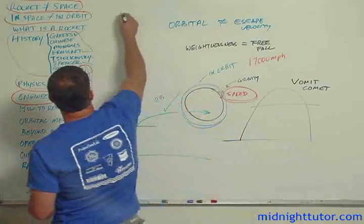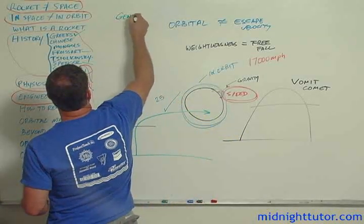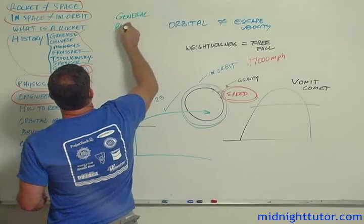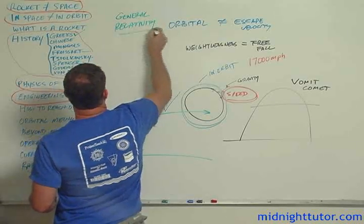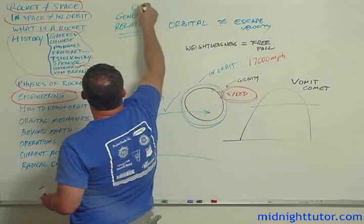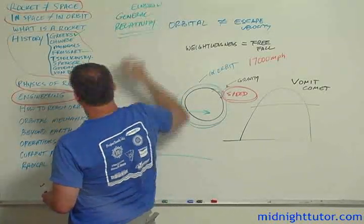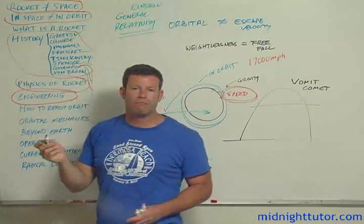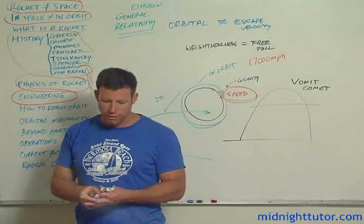Now, the theory of general relativity from Einstein says that matter, mass, creates curvature in space-time.